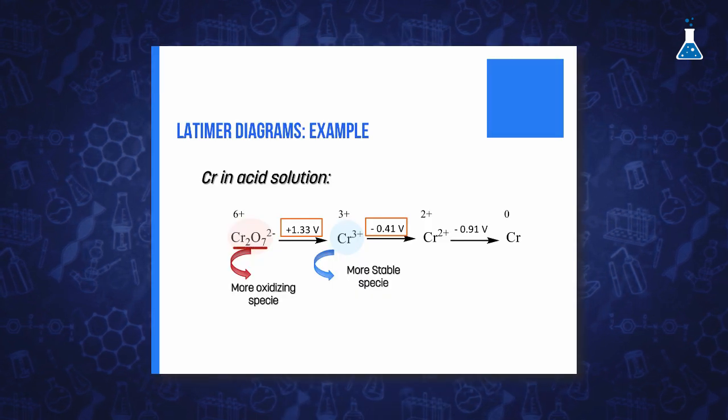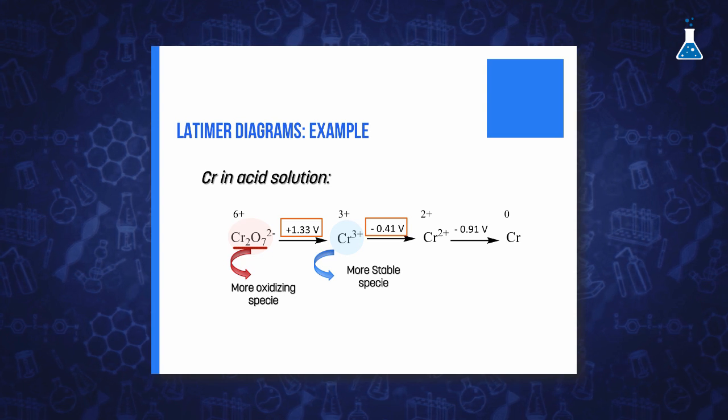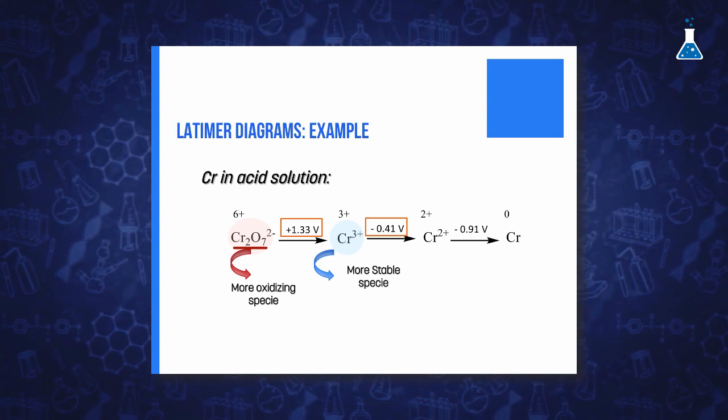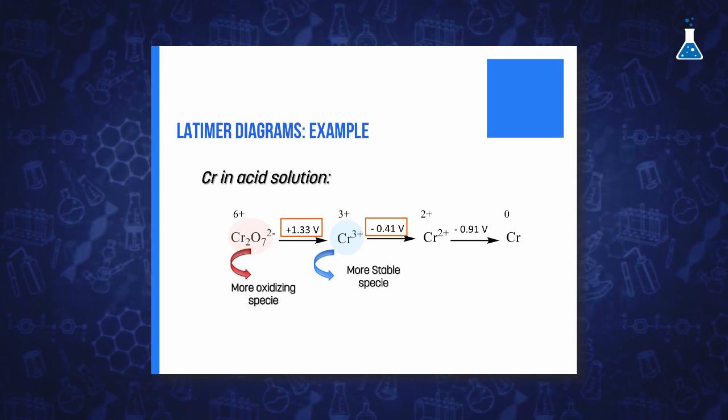The cation chromium 3+ can be easily reduced due to the negative value of this potential of reduction, and the anion dichromate is a powerful oxidation agent with a high tendency to reduce to chromium 3+ ion, as indicated by its high value of reduction potential.